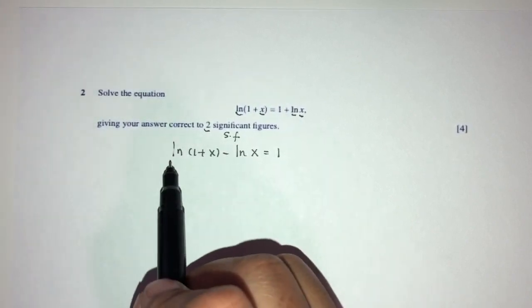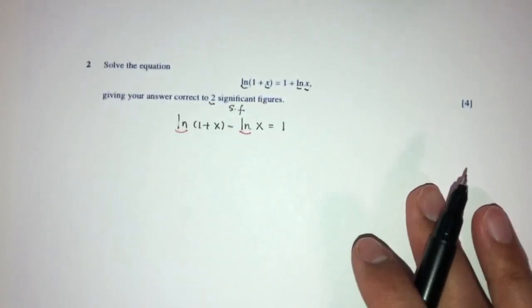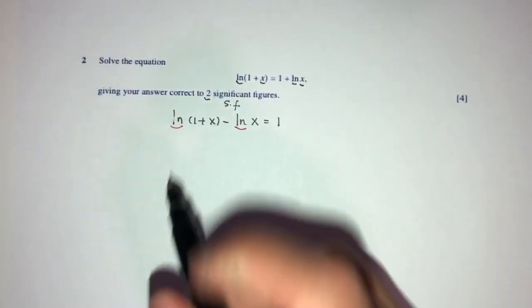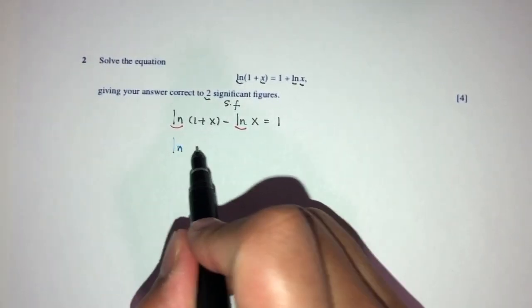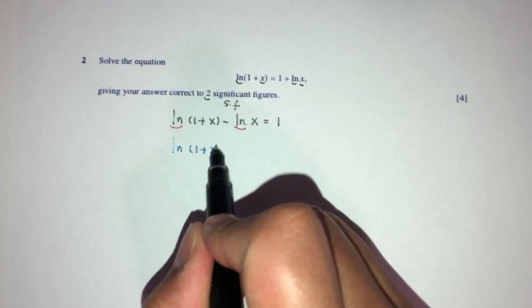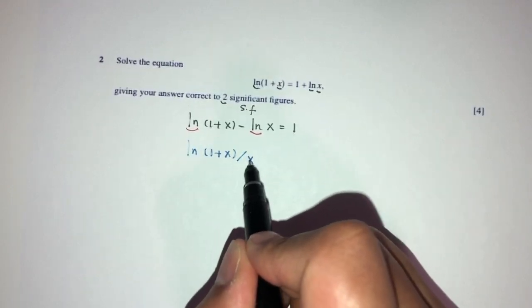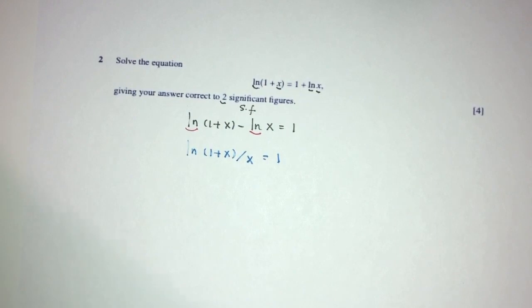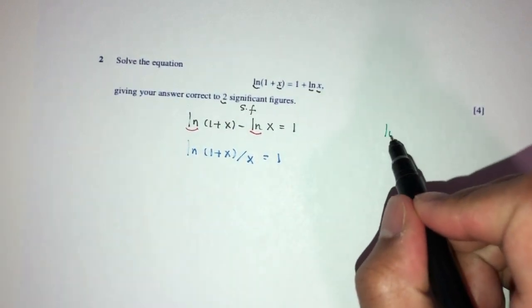Now because they are the same, ln and ln, we can combine them together by the laws of logarithms. That will be ln, that will be 1 plus x, minus becomes divide, x is equal to 1. So now one thing we have to know is, what is ln? ln is log to the base of e.